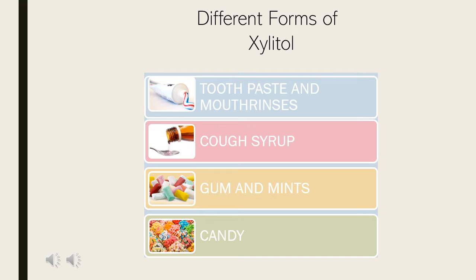Essentially, anything you can use traditional sugar for, you can replace with xylitol, and have little to no difference in taste compared to other sweeteners. Xylitol as an option for sugar alternatives is to the advantage of the consumer, as they also benefit from the anticariogenic properties and the knowledge that they are supporting their oral health alongside the rest of the body.